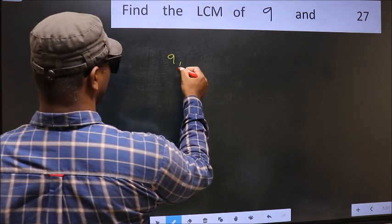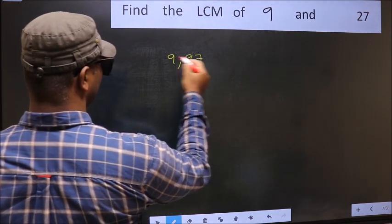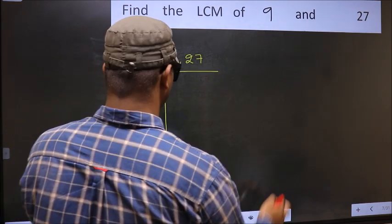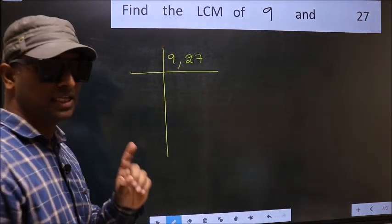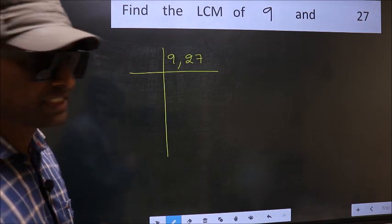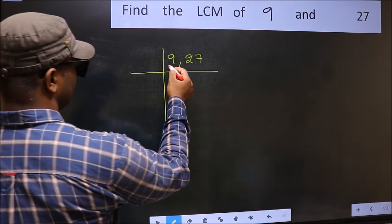9, 27. This is your step 1. Now you should focus on the first number which is 9 here.